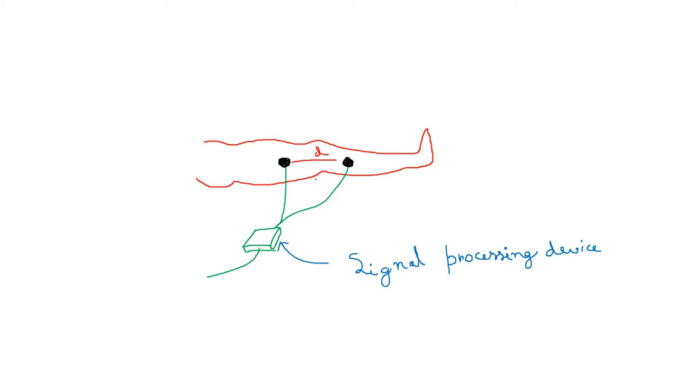And if the blood flowing through the veins or arteries changes, what will happen? Obviously the impedance of the path between these two electrodes will also change, so you can get the impedance variation with respect to time.